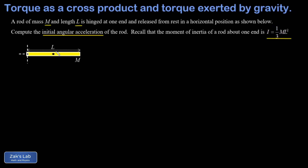By symmetry, the center of mass of this uniform rod is located at a distance of l/2 from the rotation axis. The weight vector is already perpendicular to the lever arm, so the torque is simply mg times l/2 — the perpendicular component of force multiplied by the lever arm length.